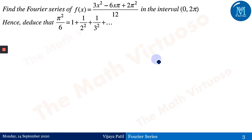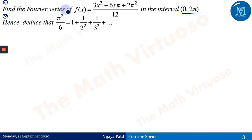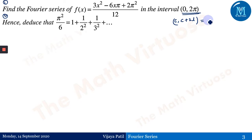The example is: find the Fourier series of f(x) given by this particular function in the interval 0 to 2π and hence deduce. We will divide this into two parts — the first part is to find the Fourier series expansion. Before that, let us concentrate on the interval 0 to 2π. We will compare this with c to c+2l, which is the interval taken up in the last session using Euler's formula.